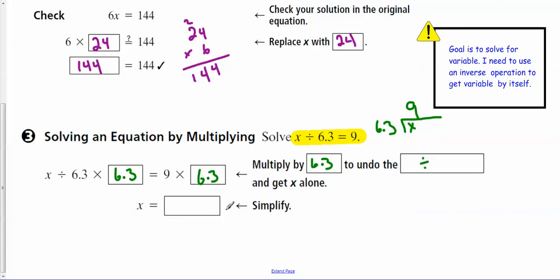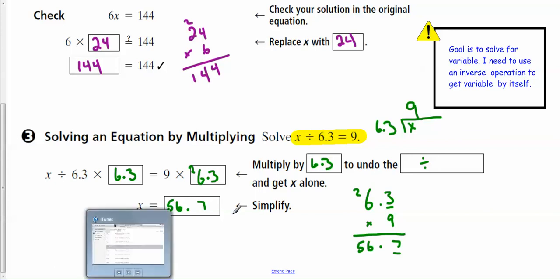So I get x all by itself. So when I multiply here, 9 times 3 is 27. Carry the 2. 54, 55, 56. So that's where my decimal point goes. So 56.7 is my answer.